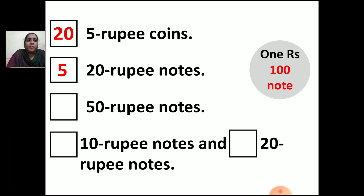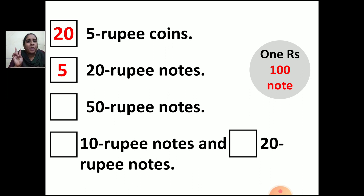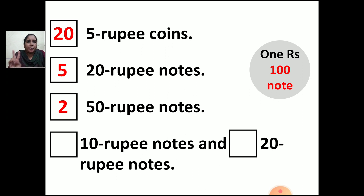Now, how many 50 rupee notes should you have to make 100 rupees? Here also you can calculate — divide 100 by 50. In the table of 50, when do you get 100? 50, 50. How many notes should you have? 2. So your answer will be 2 fifty-rupee notes will make 100 rupees.